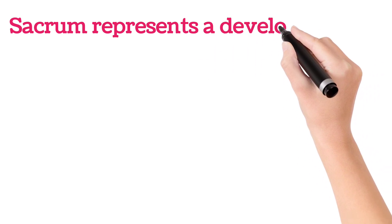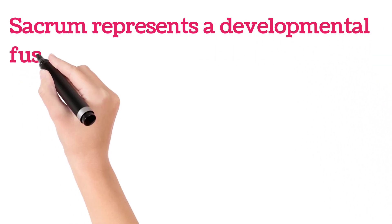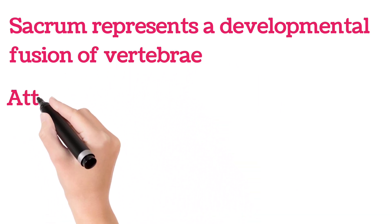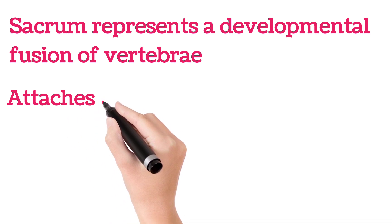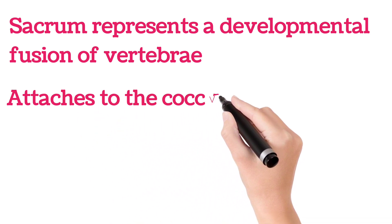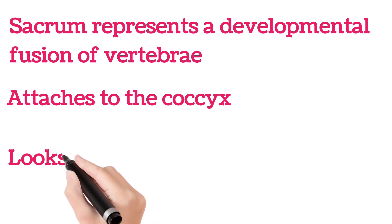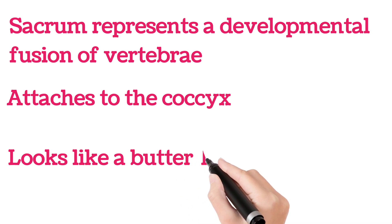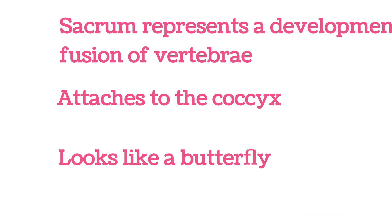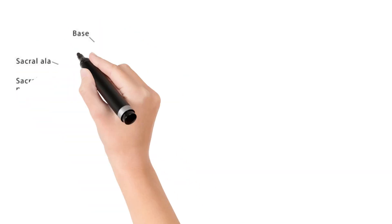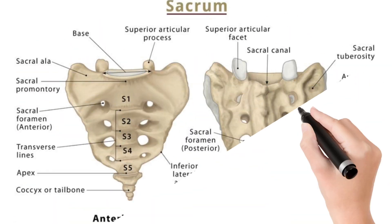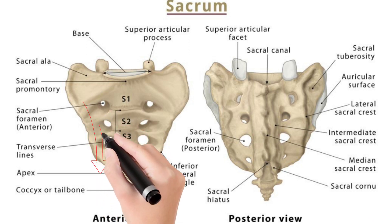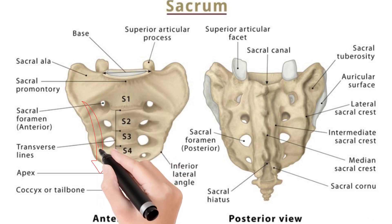In the sacrum, there are three vertebrae that are fused to form a tailbone known as the coccyx. The sacrum represents a developmental fusion of vertebrae — unlike in the cervical, thoracic, and lumbar regions where they are separate. It attaches to the coccyx below and looks just like a butterfly.